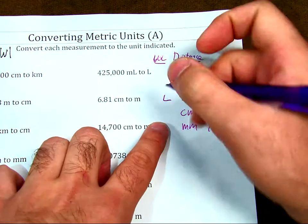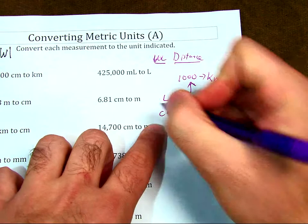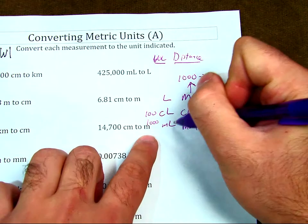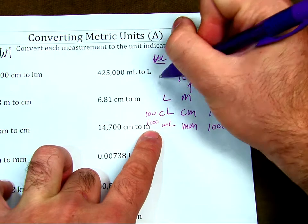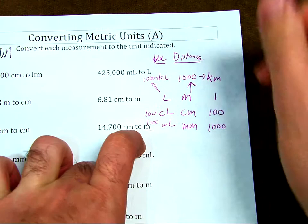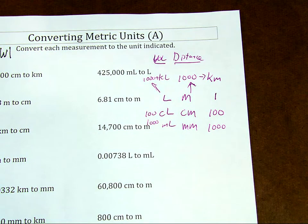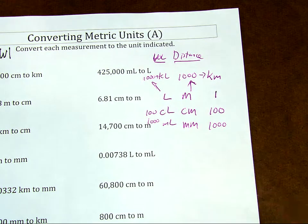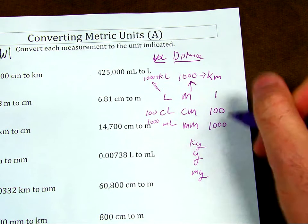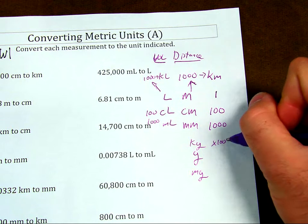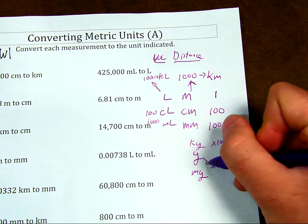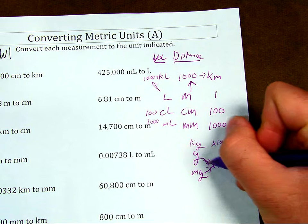For volume, I have centiliters. So there are 100 centiliters in a liter. I have 1,000 milliliters in a liter. And in a kiloliter, I have 1,000 liters in a kiloliter. The same can be said for grams, which is not on this sheet. But if I have grams, I'll have kilograms and milligrams. There are 1,000 grams in a kilogram and there are 1,000 milligrams in a gram.